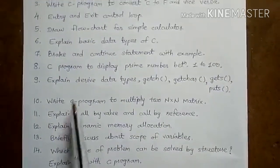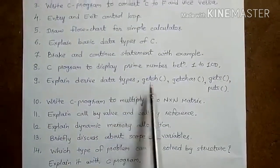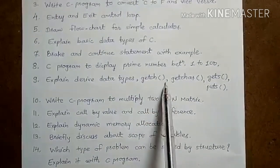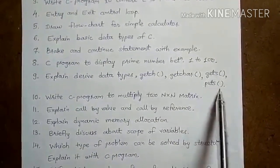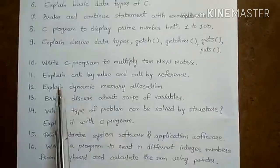Explain derived data types: getchar, getch, getche, gets, puts. Ten, write C program to multiply two N×N matrices.